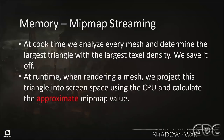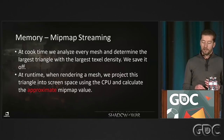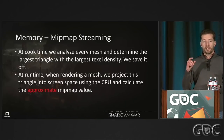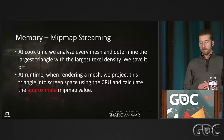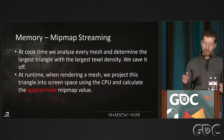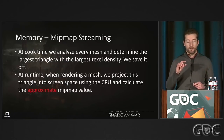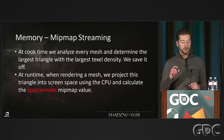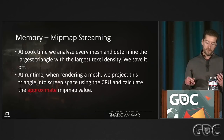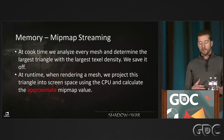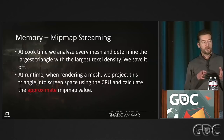A reminder that the highest mip of any texture costs 66% of the total texture memory, so the entire rest of the texture is only 33% of the total. Dropping the high mip is a massive savings. We implemented a MipMap streaming system: at cook time we analyze every mesh and find the worst-case triangle with the greatest texel density — the one that would most require the high mip. At runtime we project that triangle onto the screen using a bounding box, determine the approximate mip value needed, and use that to drive streaming decisions.